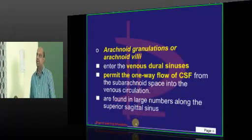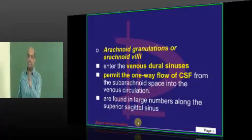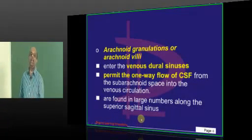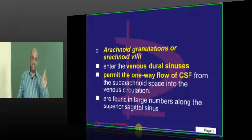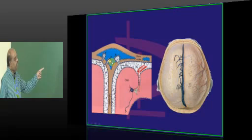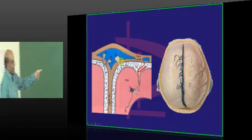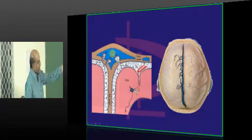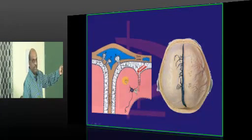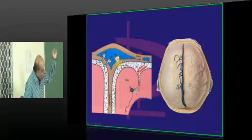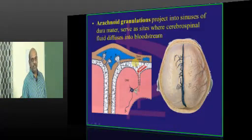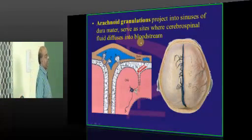If you consider the various venous sinuses, the highest number of arachnoid granulations will be found in the superior sagittal sinus. So this is how the arachnoid granulations work — they basically suck the CSF and make it flow unidirectionally into the venous sinuses.